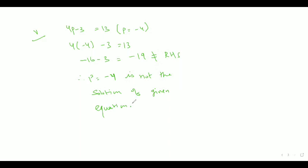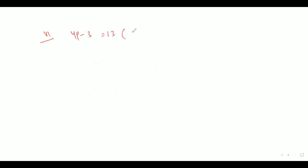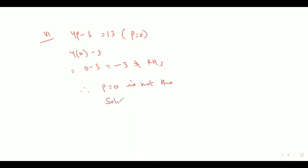The sixth part is 4P minus 3 equal to 13, where P is equal to 0. We would put 4 times 0 minus 3, that is 0 minus 3, which is minus 3. This is also not equal to RHS. Therefore, P equal to 0 is not the solution of the given equation.